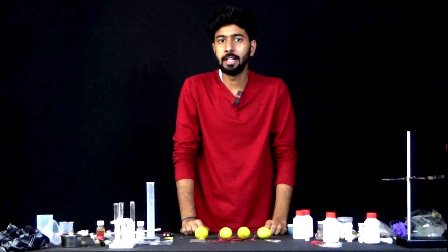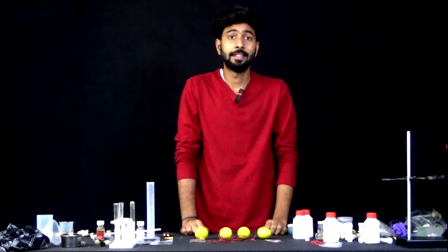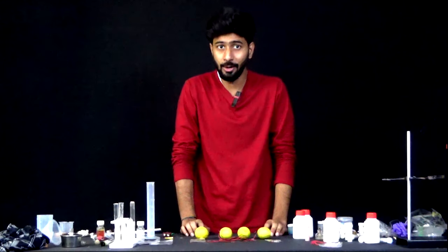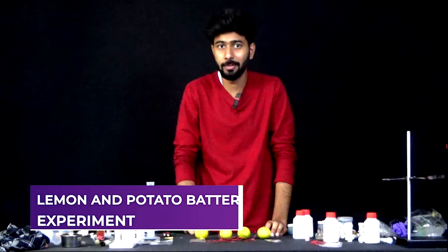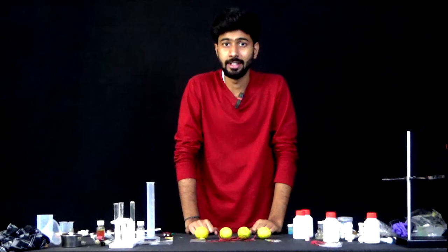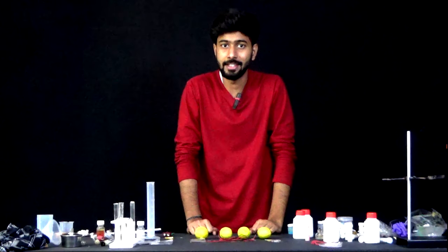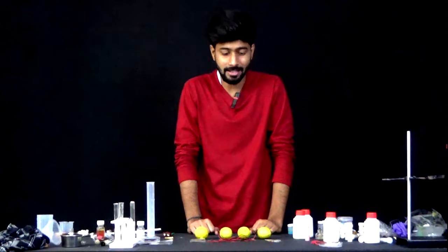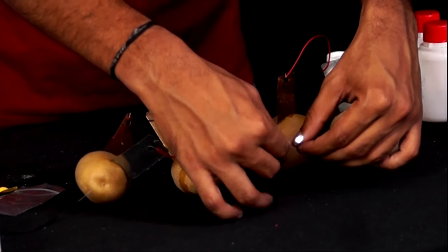So the next time when you run out of electricity at home, you should know that there are some interesting substances lying around you which you can use to make small batteries. For instance, like these lemons and potatoes, which look tasty, which are tasty, but can also be used for purposes like lighting a small LED.